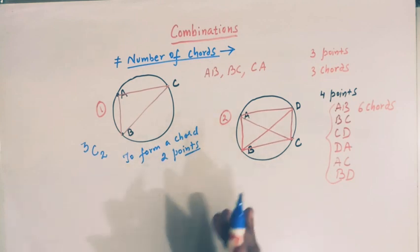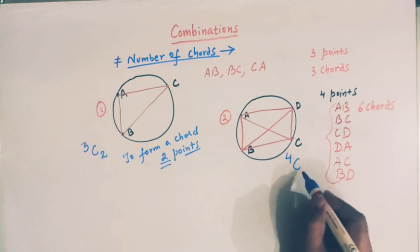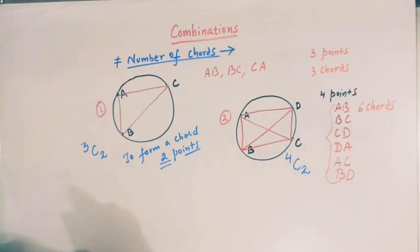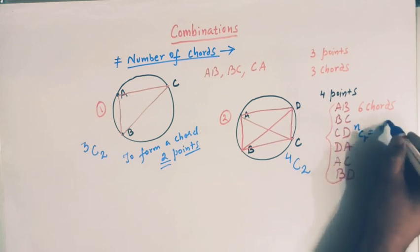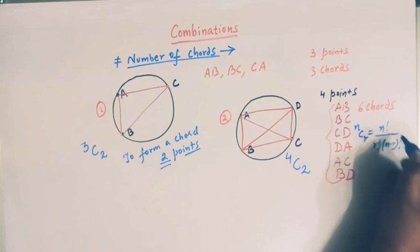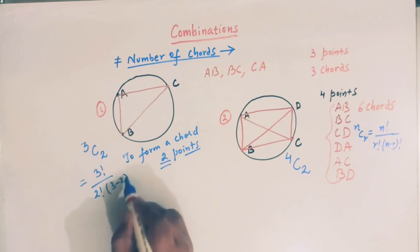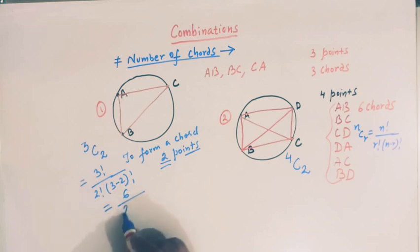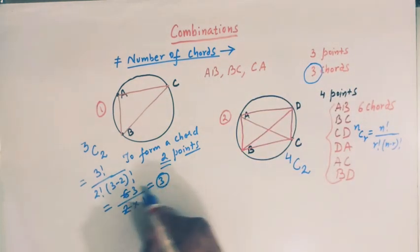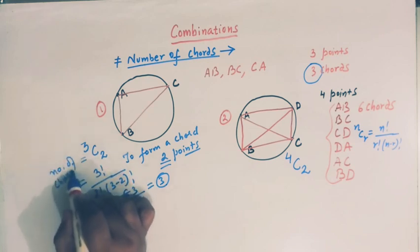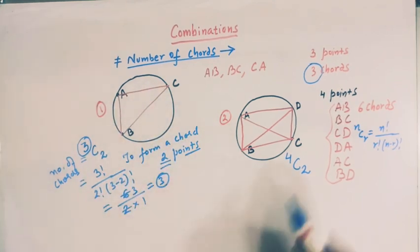From permutations and combinations, the formula for nCr is n factorial over r factorial times (n minus r) factorial. So 3C2 is 3 factorial over 2 factorial times (3 minus 2) factorial. That gives us 6 over 2 times 1, which equals 3. This is the same result — the number of chords is equal to 3 when we have 3 points on the circumference of the circle.